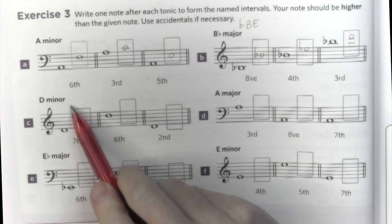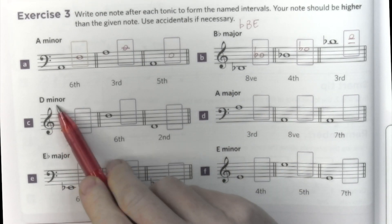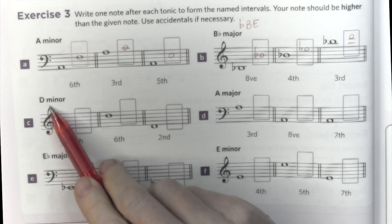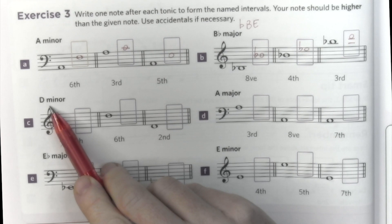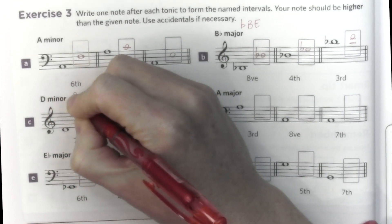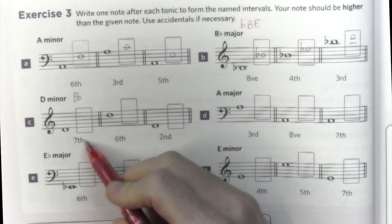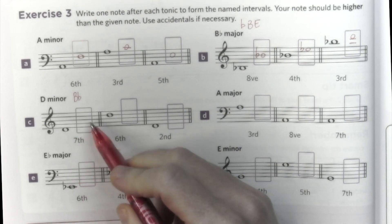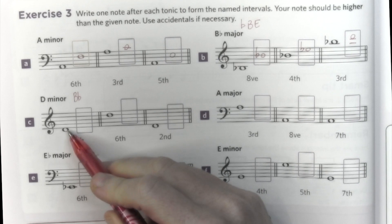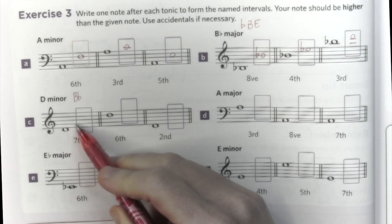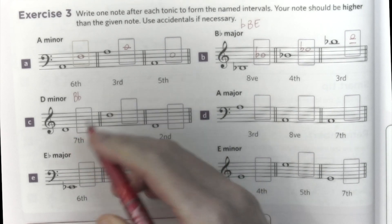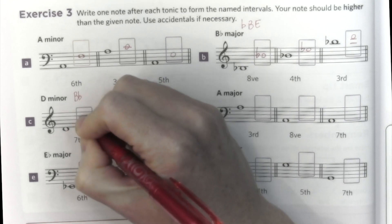D minor. D minor is the relative minor of F major, three semitones above, and F major has B flat. But the leading note, the seventh degree, is raised. So one, two, three, four, five, six, seven — this note is sharp.